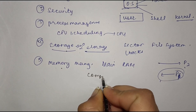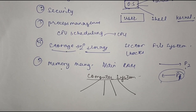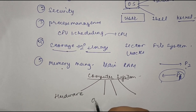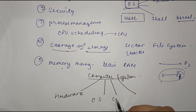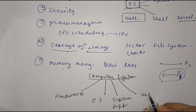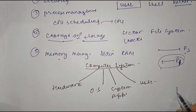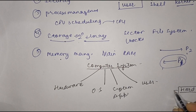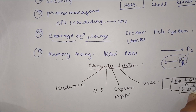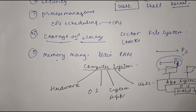The computer system is divided into four parts: number one is hardware, number two is the operating system, number three is system application programs, and number four is the user. If we depict this as a diagram, it goes from hardware at the base, then the operating system, then application system programs, and finally the users who access the system.